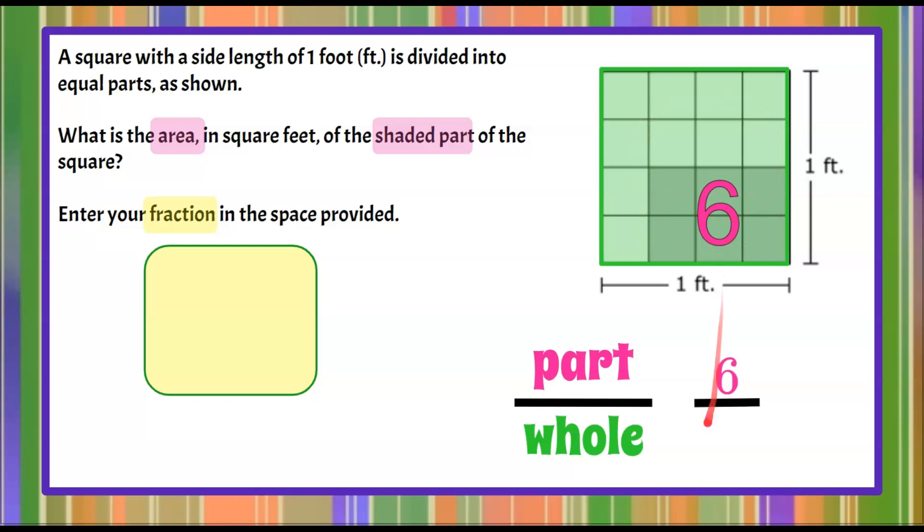So sixteen is the whole. So we put that down here. So it's a ratio of six shaded parts to sixteen of the whole. So the area that's shaded is six sixteenths of the whole.